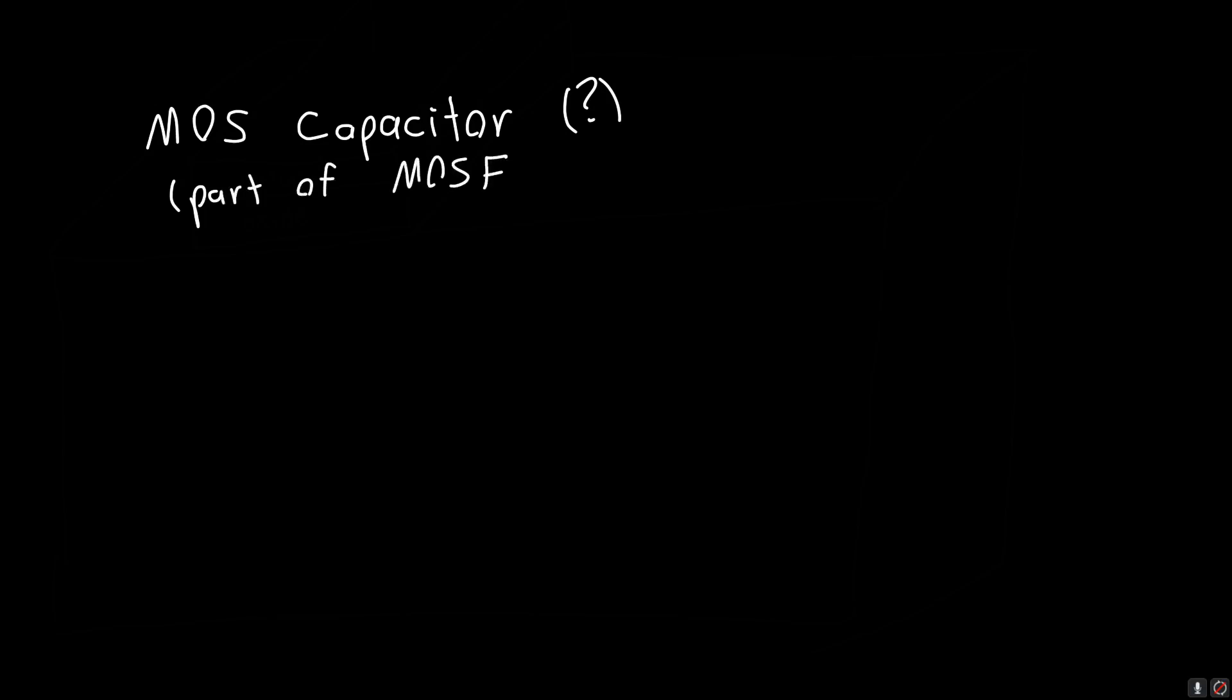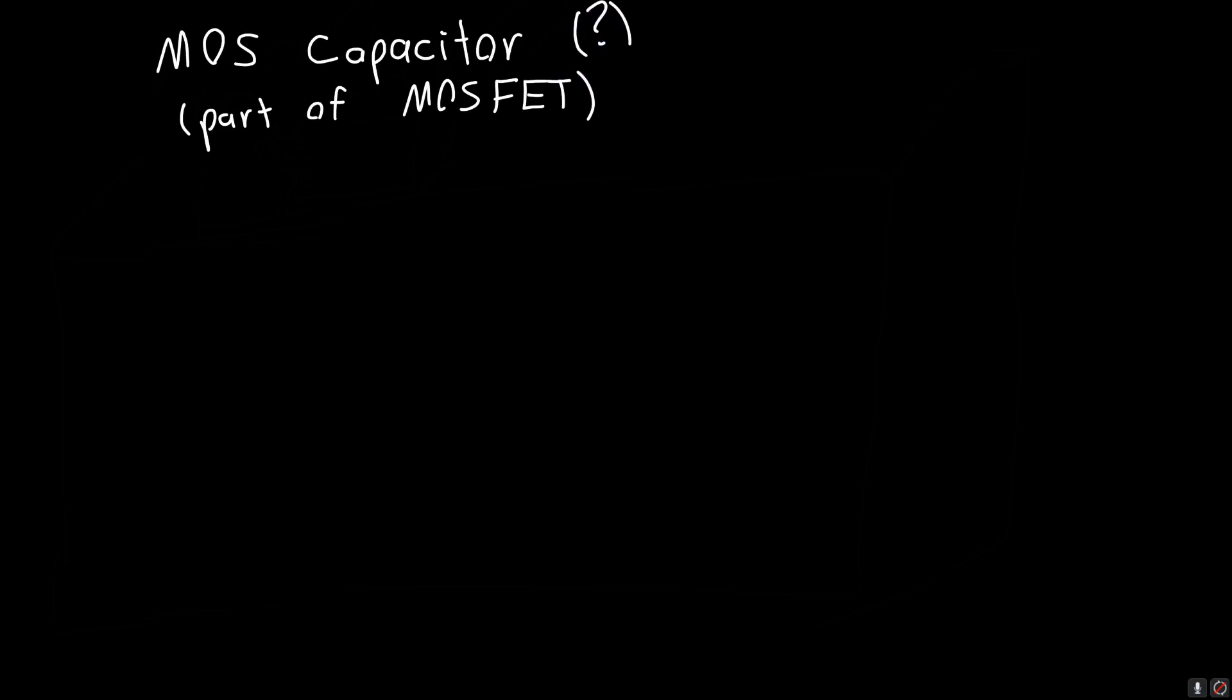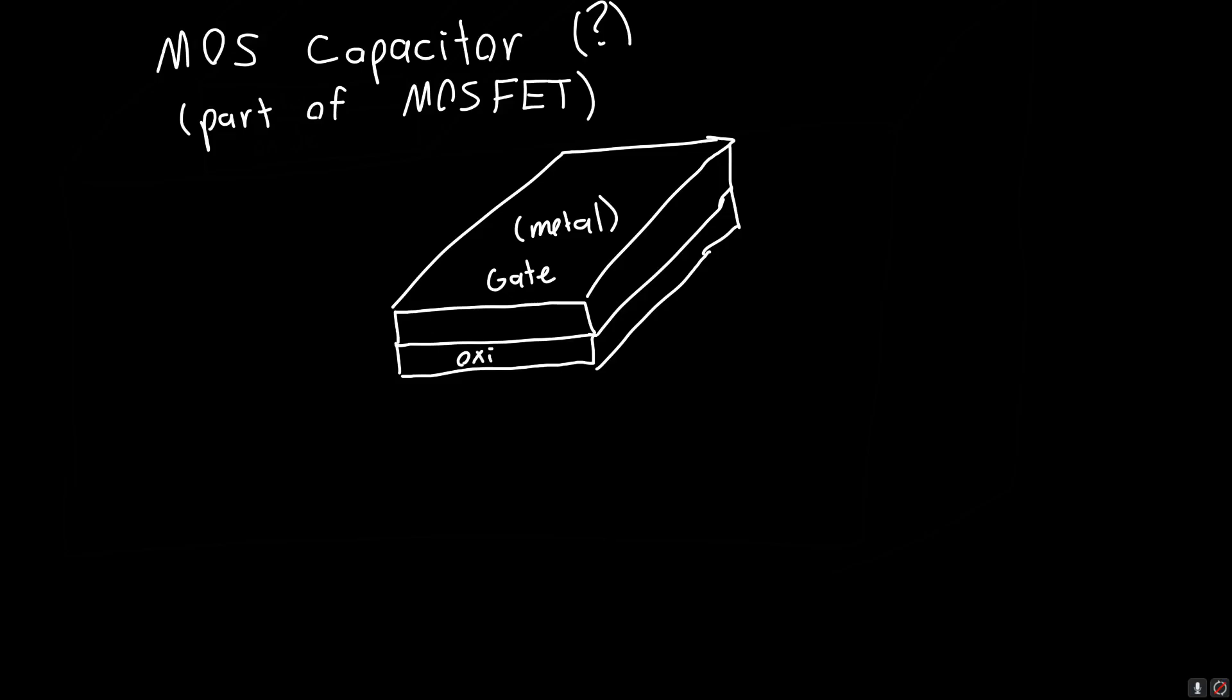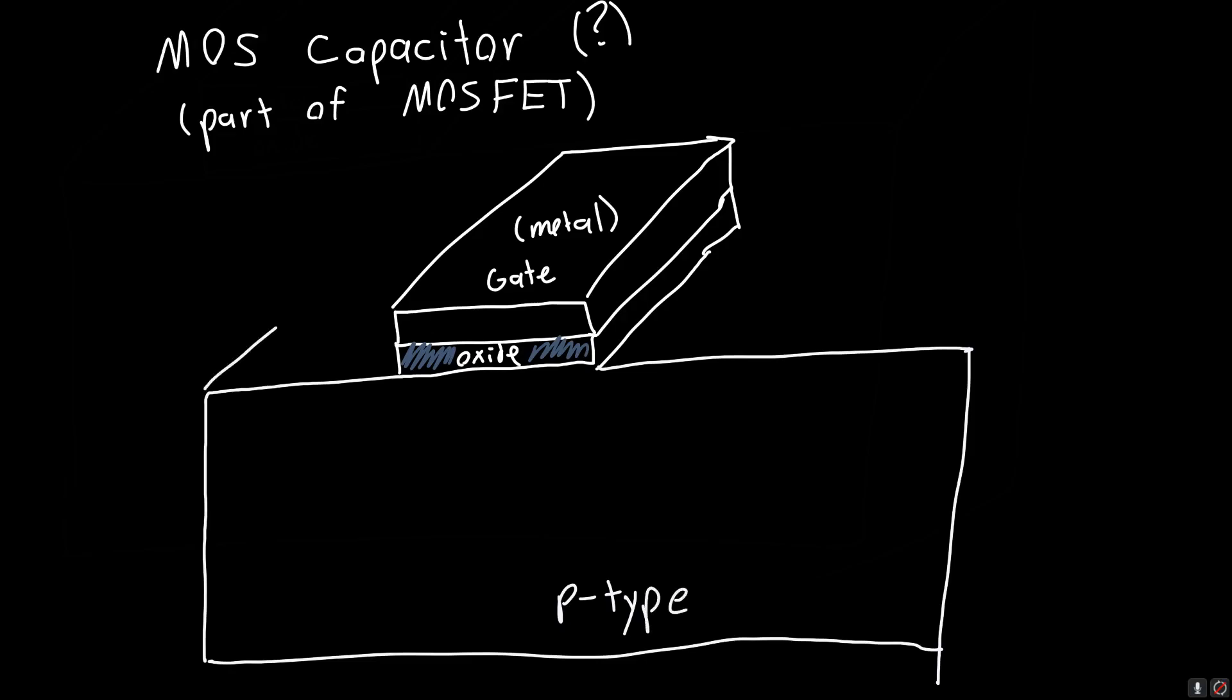Well it's part of the MOSFET. It's the most important part. If you understand how the MOS capacitor works, you understand the majority of how a MOSFET works. So let's just draw real quick the MOSFET, a 3D sketch of what it looks like. We've got this material here which is called the gate. It's typically made out of some sort of metal or polysilicon. We've got an insulating oxide here which isolates the gate from the rest of the device. And then down here we've got the substrate or the body of the semiconductor. In this case, let's say it's p-type semiconductor material, p-type silicon.